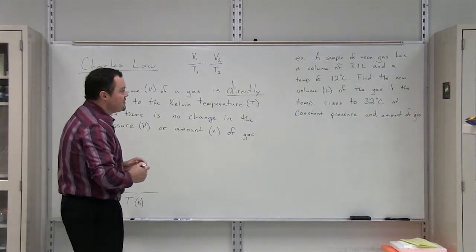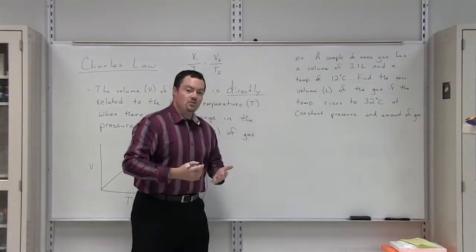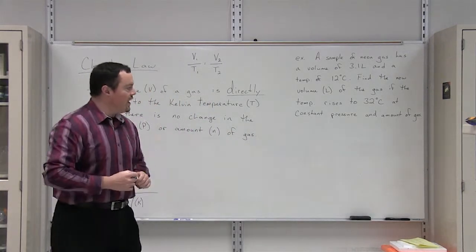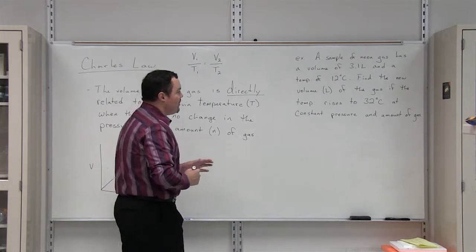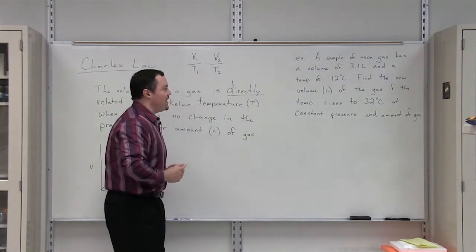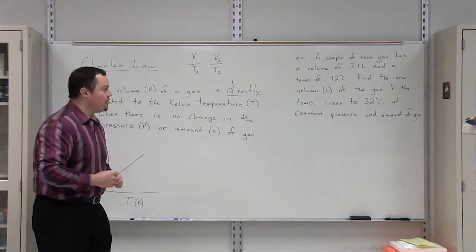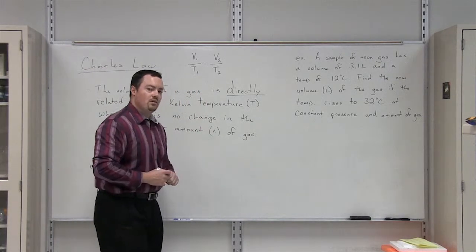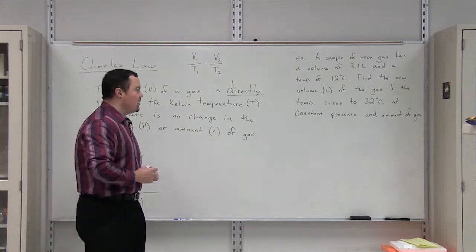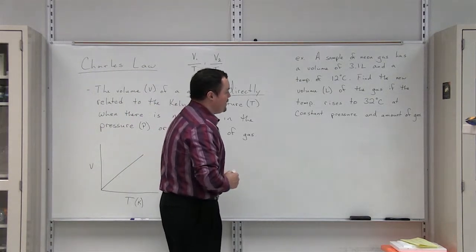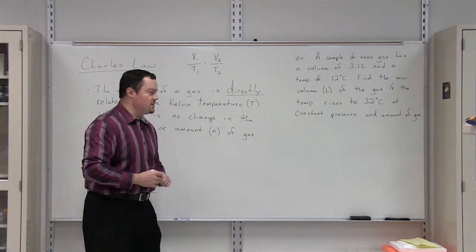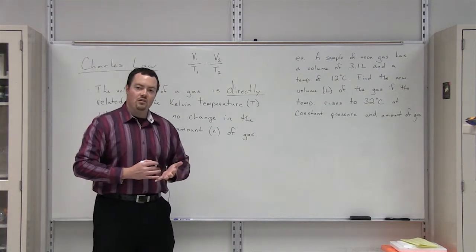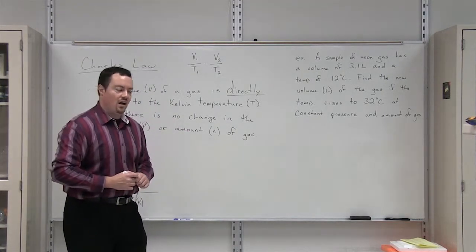Next let's look at an example of using Charles' Law in calculations. We have a sample of neon gas that has a volume of 3.1 liters and a temperature of 12 degrees Celsius. Find the new volume of the gas if the temperature rises to 32 degrees Celsius and the pressure and the amount of gas stays constant.